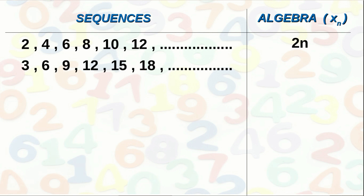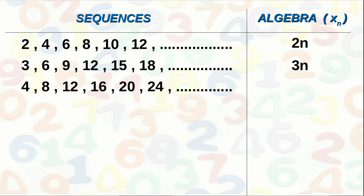Next: 3, 6, 9, 12, 15, 18, etc. — the sequence of multiples of 3, which starts with 3 and has 3 added repeatedly. The first term is 3, second term 6, third term 9. The terms are got by multiplying the positions by 3, so the nth term is 3n. Then the sequence 4, 8, 12, 16, 20, 24, etc. — multiples of 4 — the nth term is 4n.